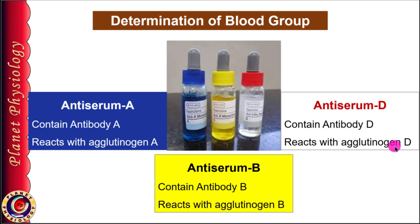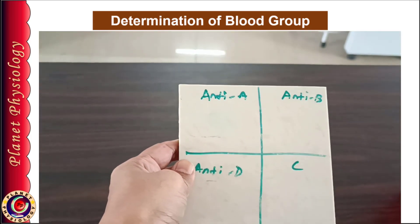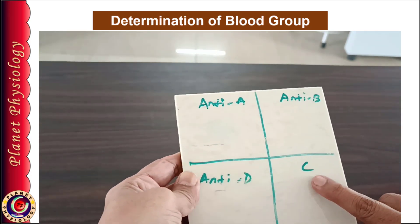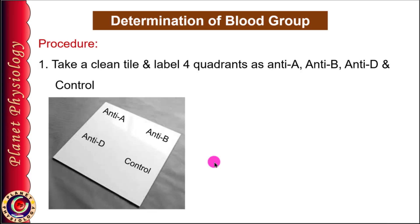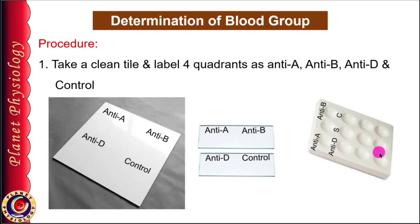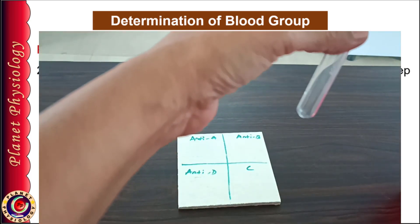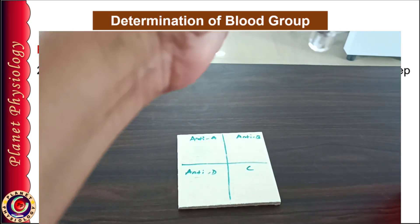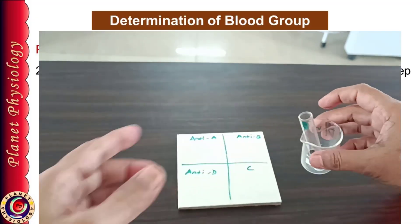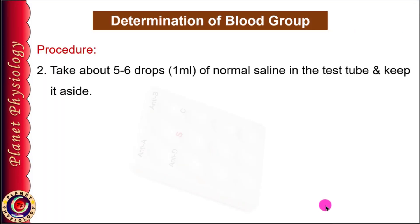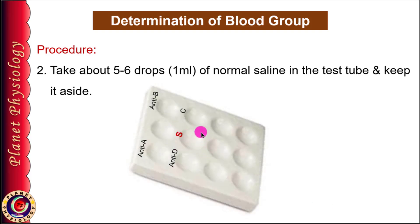Let's start with the procedure. First, label the 4 quadrants of the tile as anti-A, anti-B, anti-D, and control or C. Instead of a tile, you can use glass slides or a tile with depression — whichever method you use, it's better to label them all. Then take about 1 ml of normal saline in the test tube and keep it aside. If you are using a tile with depression, take the saline in the depression labeled S.